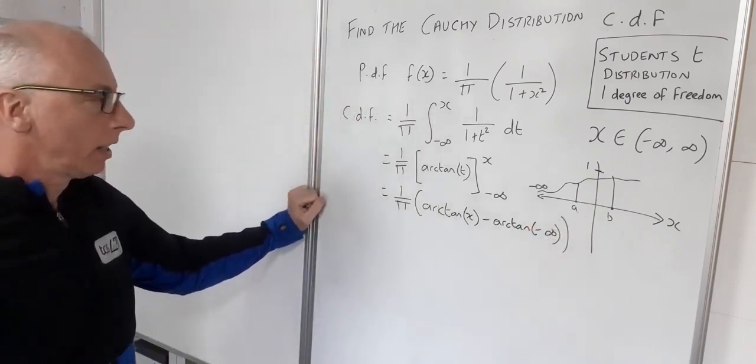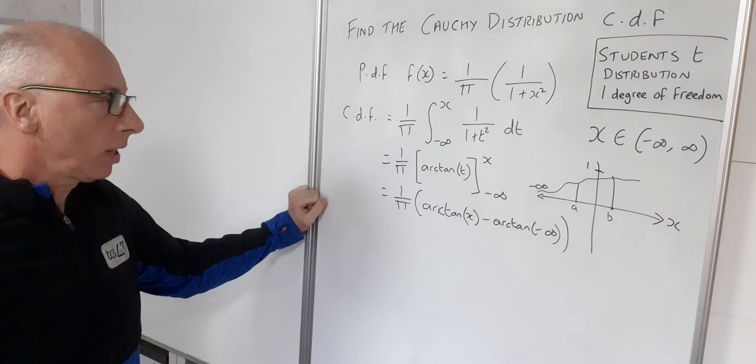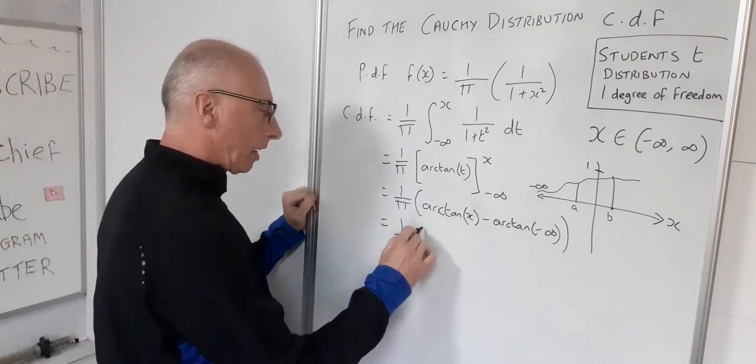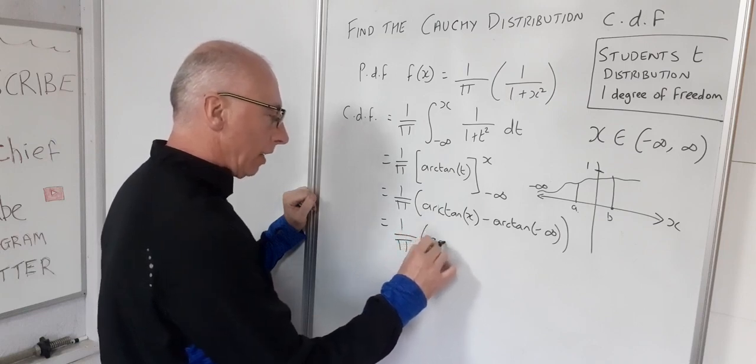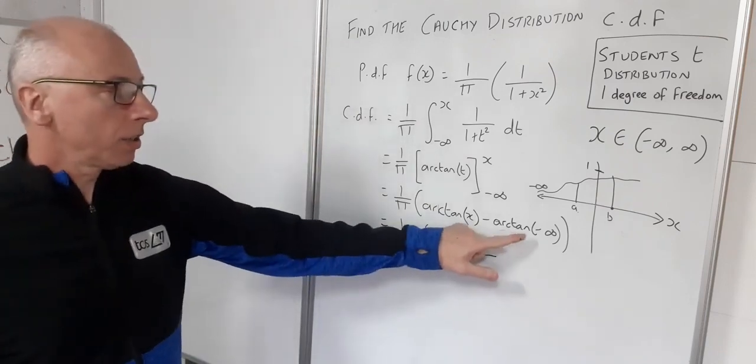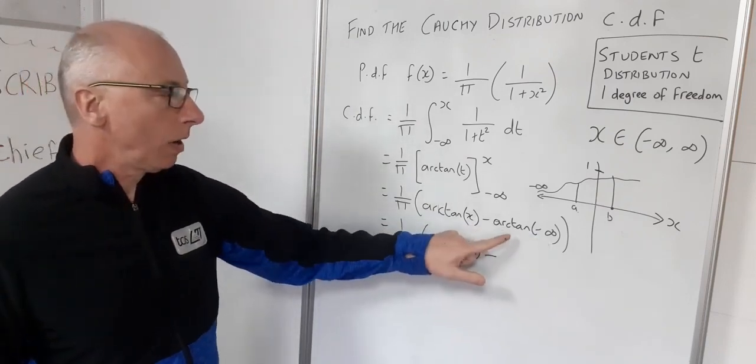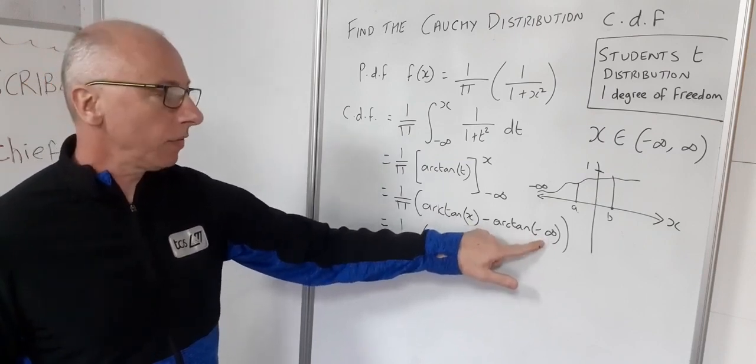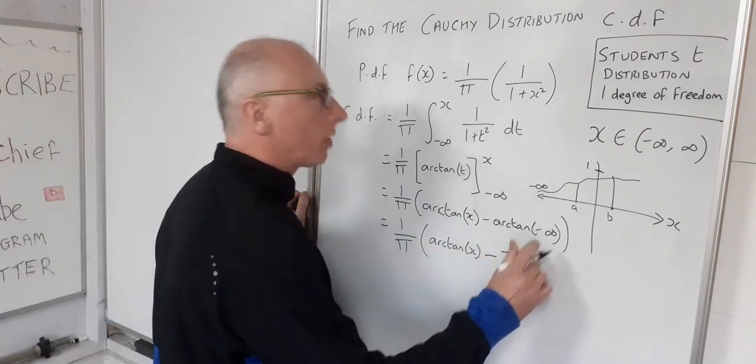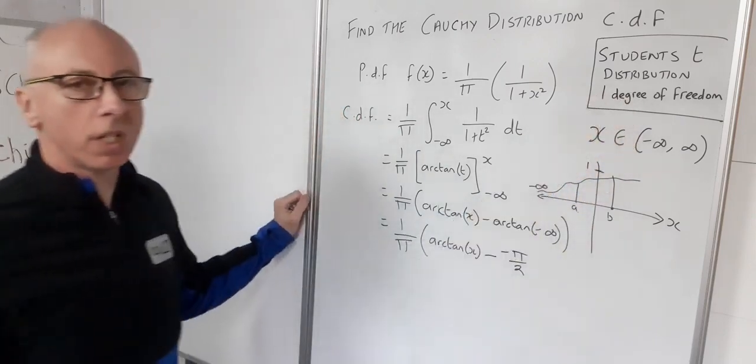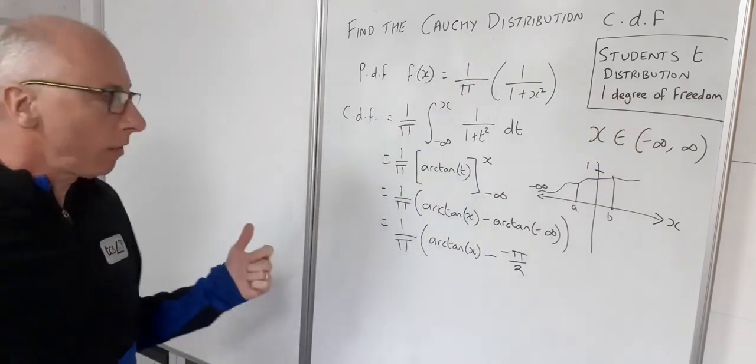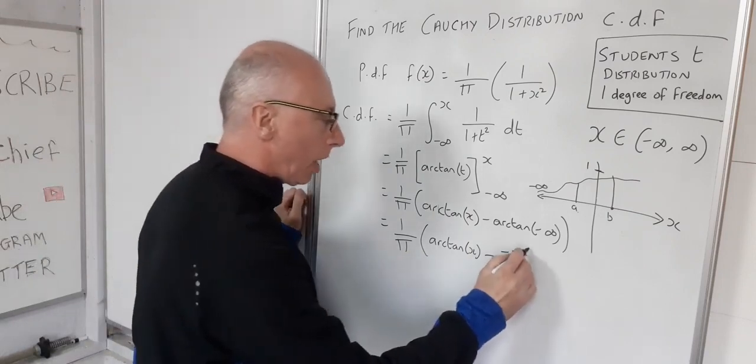Right, now what's our value here? So 1 over pi, that's our constant that can stay. We've got arc tan of x minus, so arc tangent of negative infinity. Well, the limit as arc tangent approaches negative infinity is minus pi over 2. So we showed that on that previous video where we found this student's t distribution 1 degree of freedom which showed us our Cauchy distribution. So that's where we went over the limit of that if you want to have a look at that. But it's minus pi over 2.